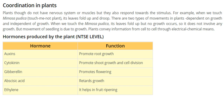How does coordination in plants take place? Plants do not have any nervous system or muscles, but they do respond to stimuli. For example, Mimosa pudica, the touch-me-not plant, folds its leaves and droops when touched. There are two types of movement: one dependent on growth and one independent of growth. When you touch Mimosa pudica, its leaves fold but no growth occurs — it is independent of growth. But if you move a seedling, it grows because that movement is dependent on growth. Plants convey information from cell to cell through electrical and chemical means.